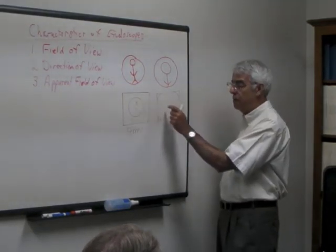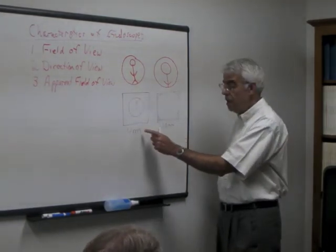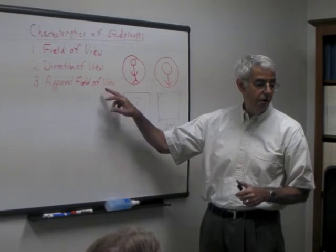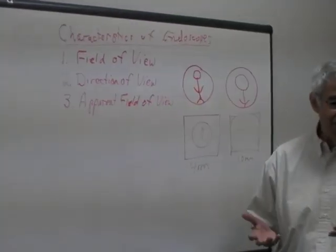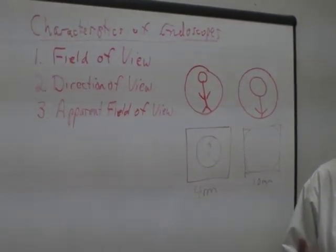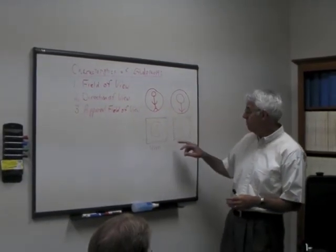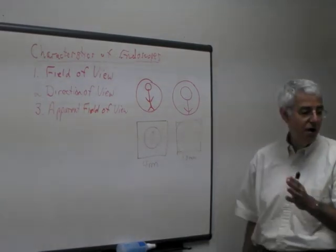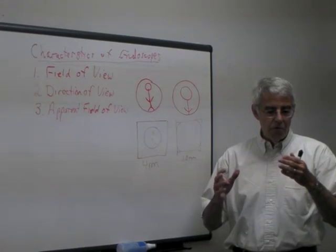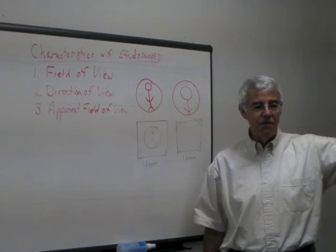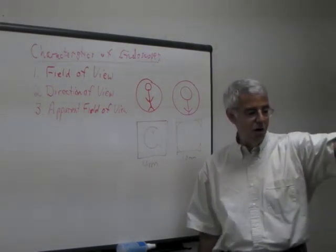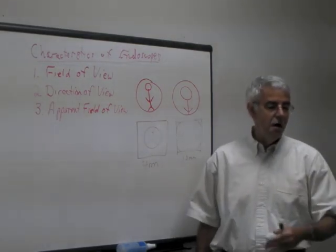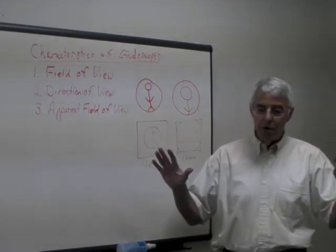Surgeons want to see the same size circle every time they use their 10 millimeter laparoscope versus their 4 millimeter arthroscope. A measure of that is apparent field of view. It seems to be an esoteric measurement — most people have never heard of apparent field of view — but you can see how important it is. By using apparent field of view, that's all we need to quantify the endoscope, without needing all those caveats about camera format and focal length.